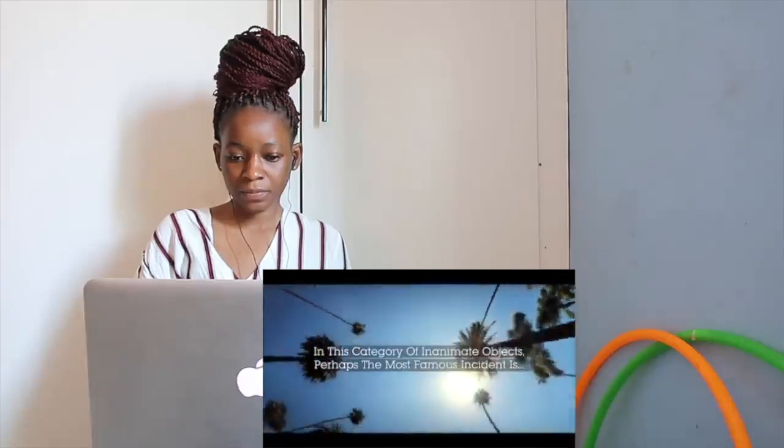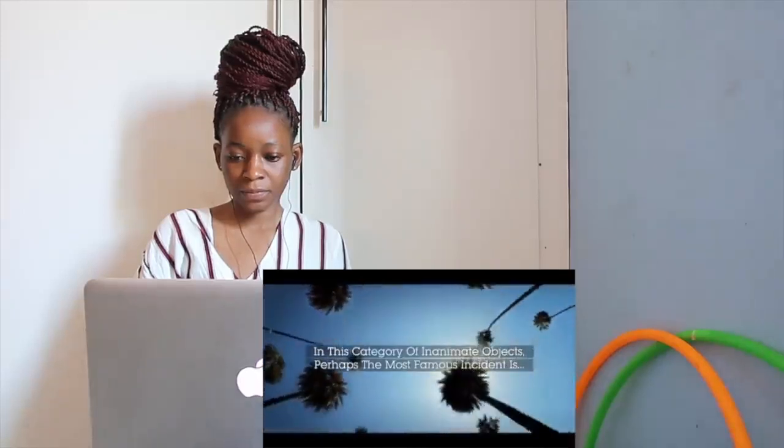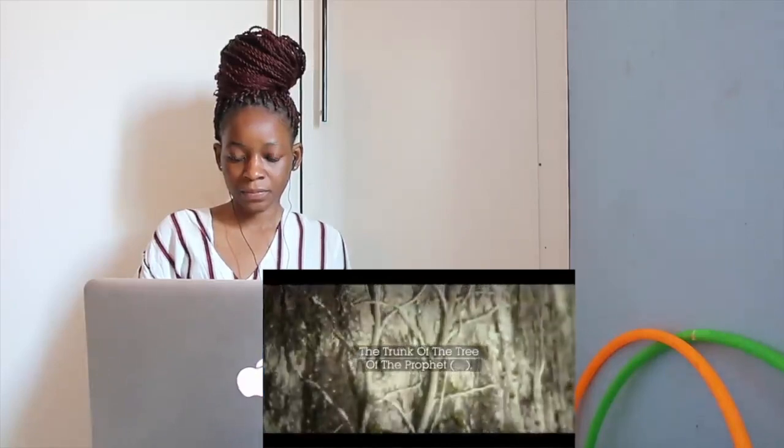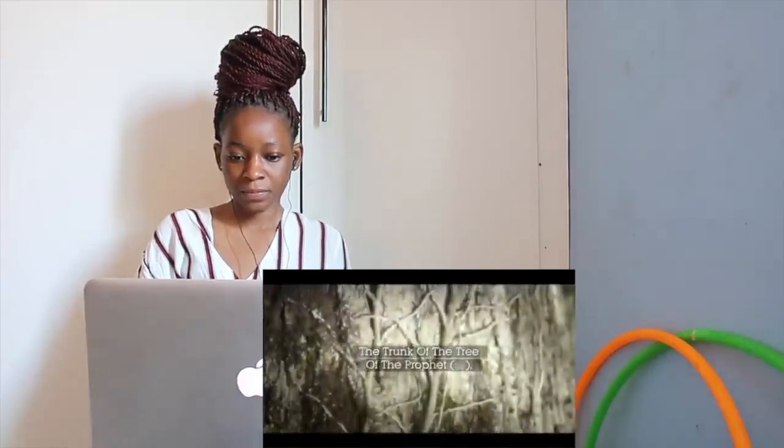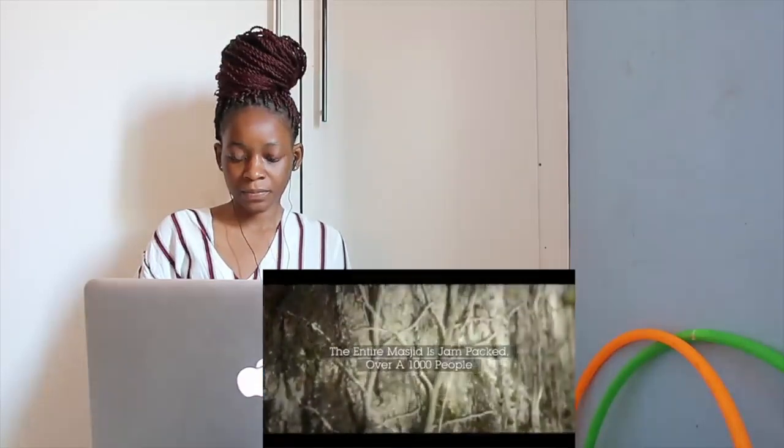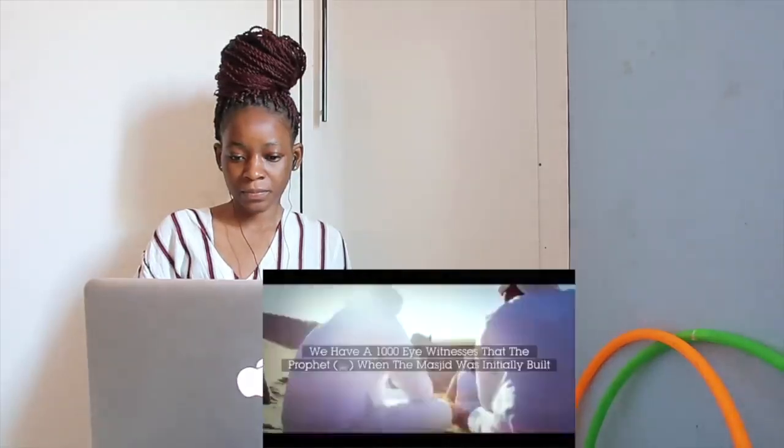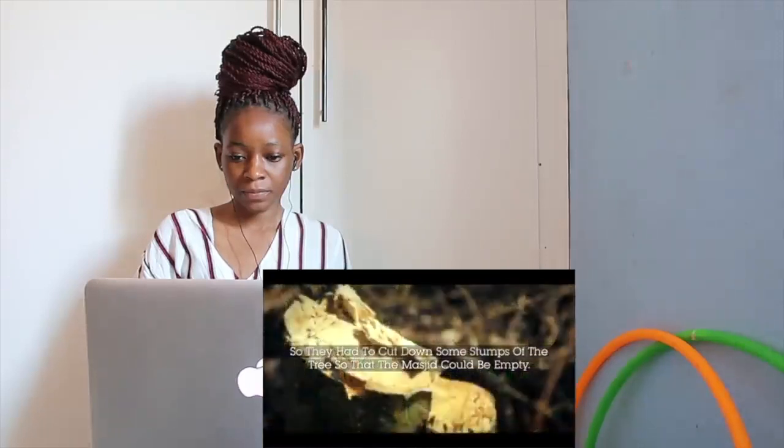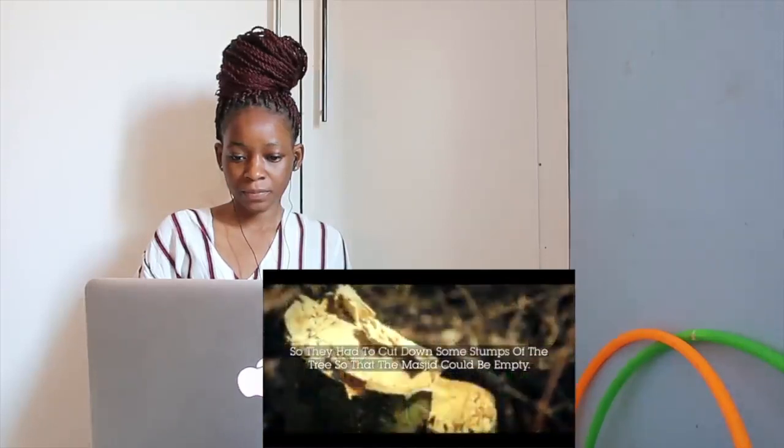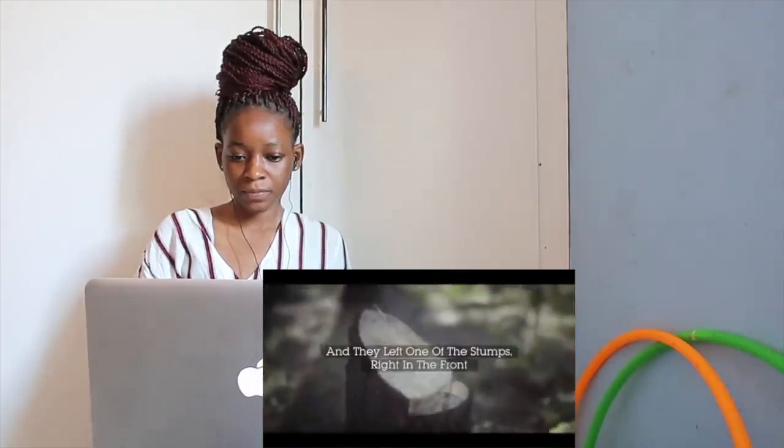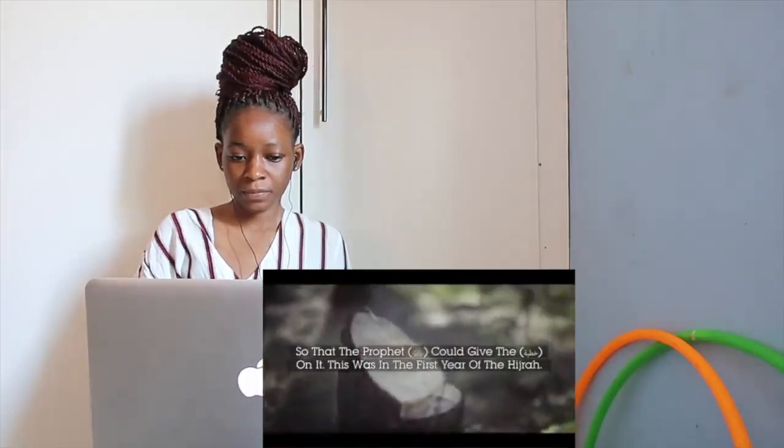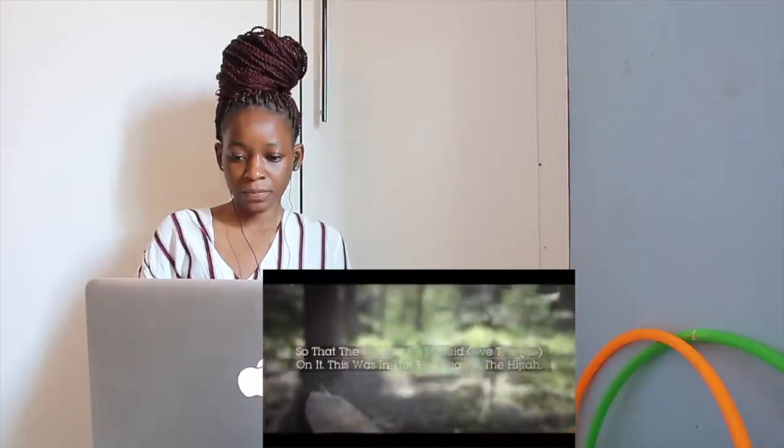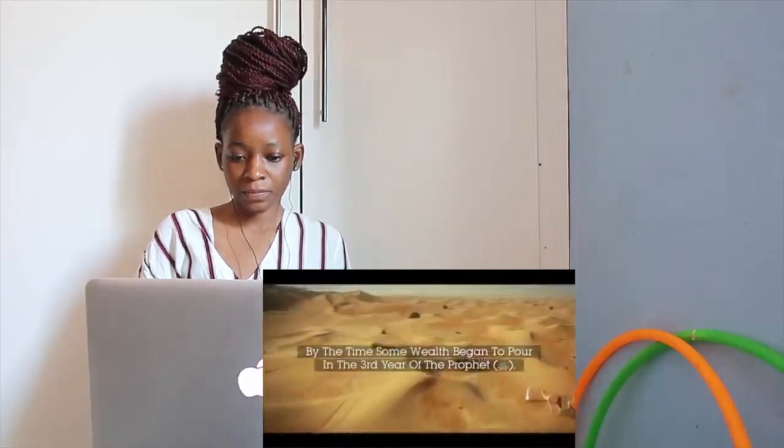Perhaps the most famous in this category of inanimate objects is the trunk of the tree. The trunk of the tree of the Prophet, the entire masjid is jam-packed. Over a thousand people could fit in the masjid of the Prophet. We have a thousand eyewitnesses. The Prophet, when the masjid was initially built, they had to cut down some stumps of the tree so that the masjid could be empty. They left one of the stumps right in the front so that the Prophet could give the khutbah on it. This was in the first year of the hijrah.